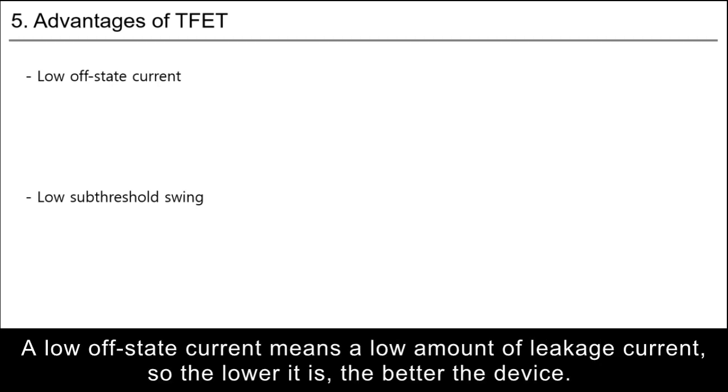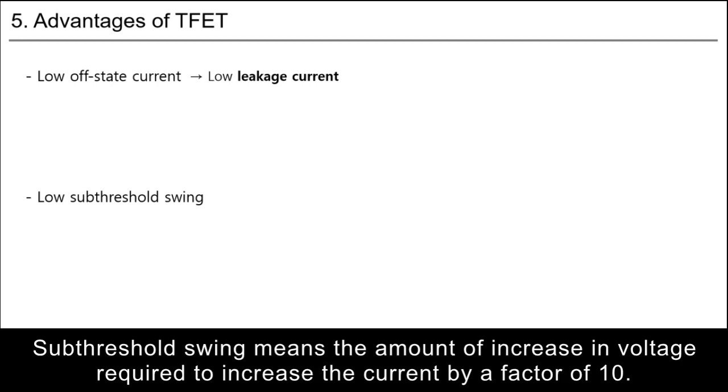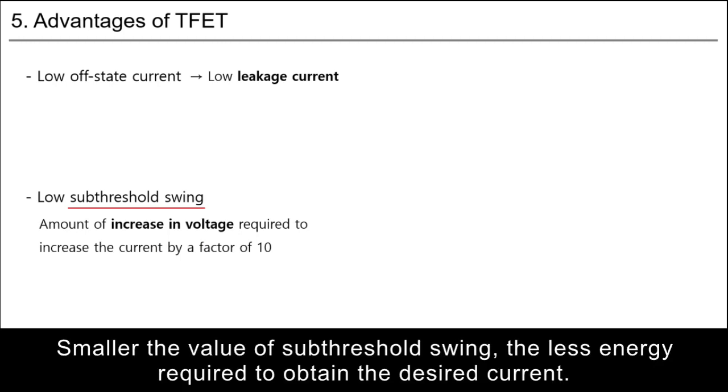A low off-state current means a low amount of leakage current, so the lower it is, the better the device. Subthreshold swing means the amount of increase in voltage required to increase the current by a factor of 10. The smaller the value of subthreshold swing, the less energy required to obtain the desired current.